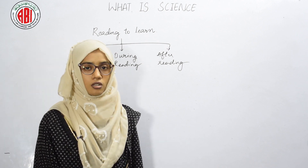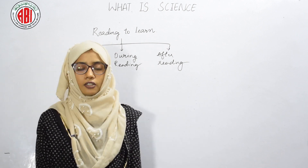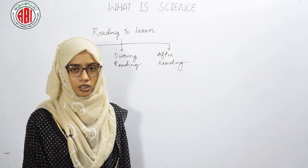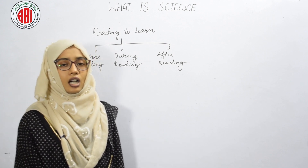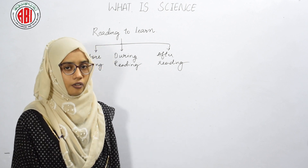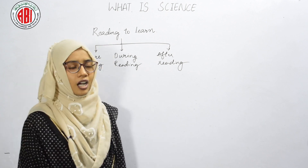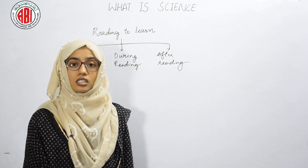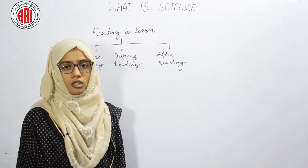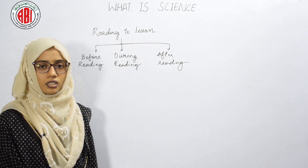After reading, summarize what you have learned. Next, ask yourself questions about what you have read. Then study the photographs and illustrations present in your reader or from your reading material. These are the steps to follow to become a good science reader.